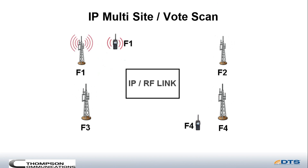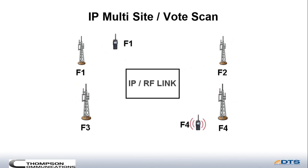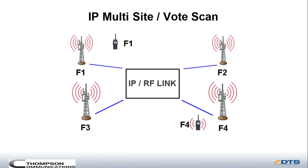As the user keys up, the repeater keys up as it normally would in a single-site system but also passes audio into the IP/RF link network. This gets passed to all the other sites, which receive the audio and transmit the same audio. If the user on F4 portable wants to talk back, the process is repeated — he keys up, the local repeater keys up, audio gets passed back into the network, and all the other sites receive the audio and transmit.